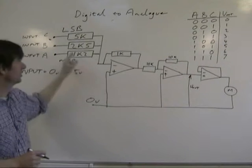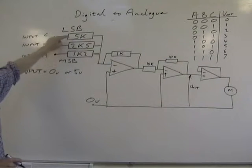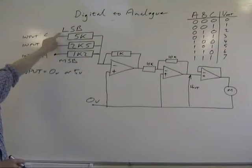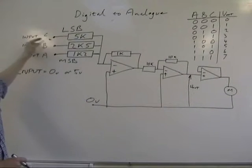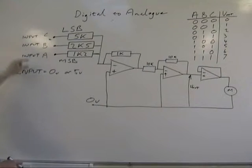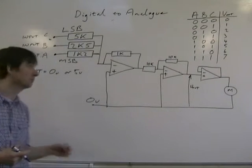It is, of course, a summing amplifier. That's the least significant bit. Because there's a 5k there, less current will flow in from here. The inputs are generally from your microcontroller.